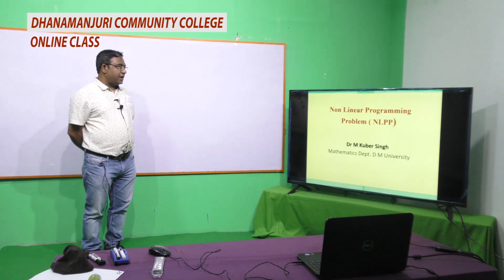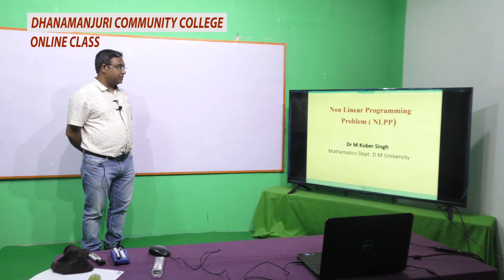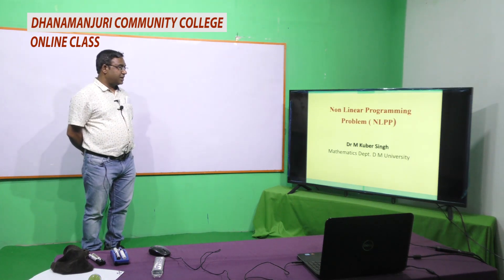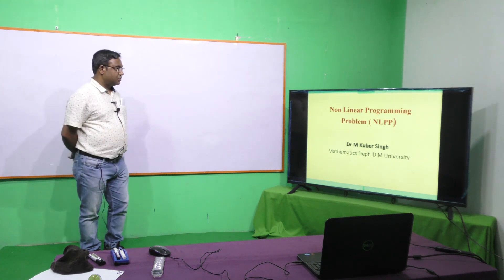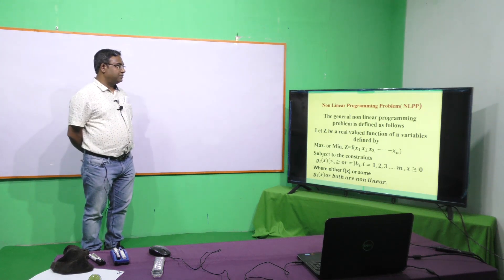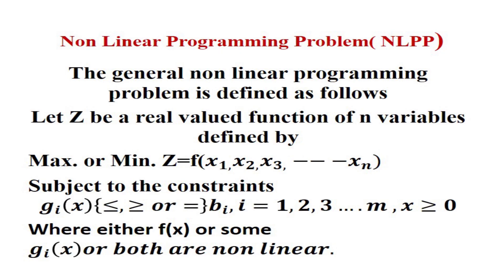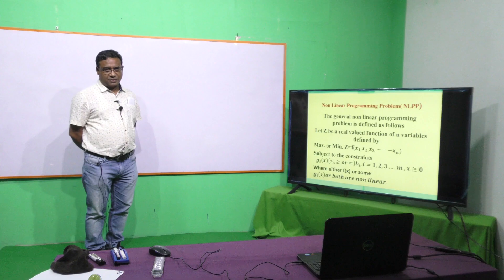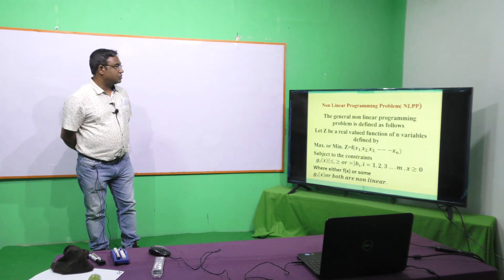In the mathematical formulation of real life problems, sometimes the objective function may be non-linear, or the constraint equations may be non-linear. If the objective function as well as constraints are non-linear, the problem is called a Non-Linear Programming Problem. There are several methods for solving NLPP: Lagrangian method, Kuhn-Tucker method, Bell's method, and Wolfe's method.